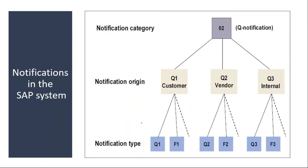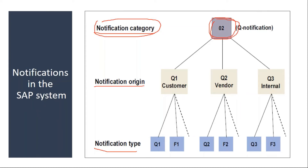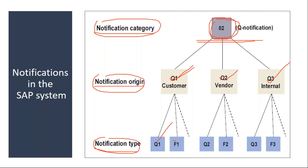Before going into the system and creating notifications, we need to understand a few terms: notification category, notification origin, and notification type. All the notifications created in QM belong to category 0 — this is standard SAP and you cannot change it. Then notification origin indicates because of which origin they are generated: either customer complaint, complaint against vendor, or internal. Based on the notification origin, you can have different notification types.